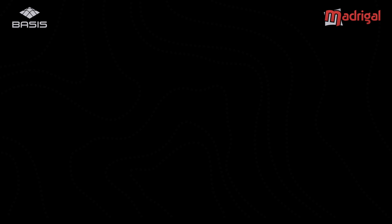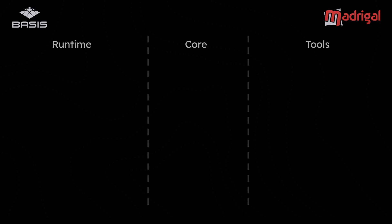So first of all let's split the system into three rough parts. We have the runtime here on the left — that's everything related to the running game. On the right we have the tools — that's everything related to making the game. And in the middle we have the core. Now these are rough splits; there's some overlap between these. But the idea of this split is to give you a rough idea of what goes where.